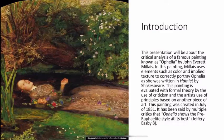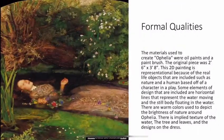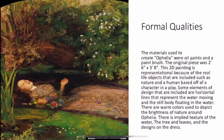This painting was created in July of 1851. It has been said by multiple critics that Ophelia shows the pre-Raphaelite style at its best. The materials used to create Ophelia were oil paints and a paintbrush. The original piece was nearly 3x4. This 2D painting is representational because of the real-life objects that are included, such as nature and a human based off of a character in a play.